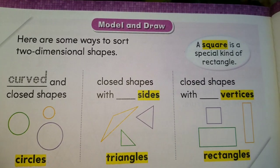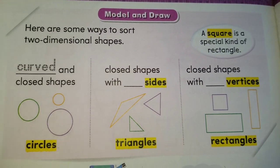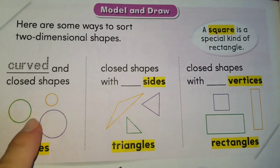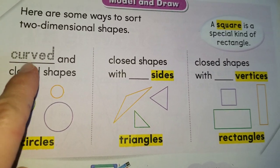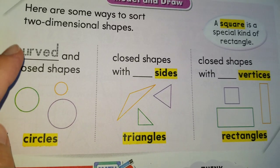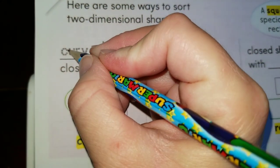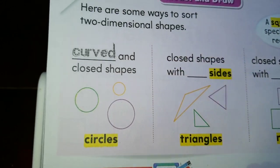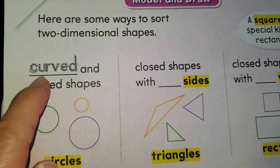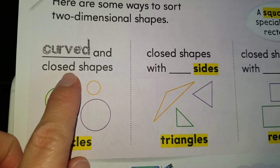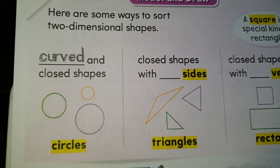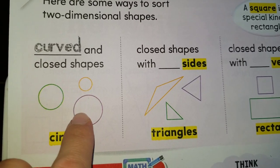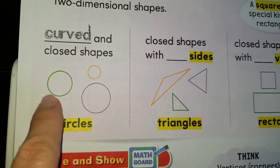Here boys and girls we have an example — just a little taste of what we are going to be doing. It says here are some ways to sort two-dimensional shapes. By the way, all of these shapes are closed. It says 'curved and closed shapes' — I want you to trace the word 'curved.' Curved — it's the idea, and we're learning about this ending this week. Curved and closed shapes — the circles, right? They are completely curved, they don't have a straight side, and they are closed.